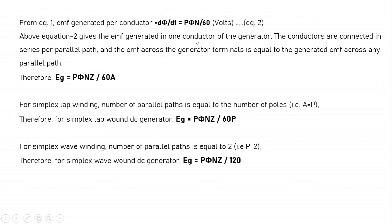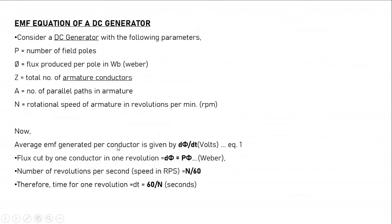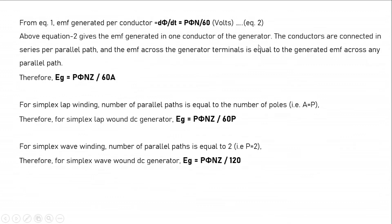Equation 2 gives the EMF generated in one conductor. The conductors are connected in series within each parallel path. If A parallel paths are provided, all conductors are distributed across these parallel paths, and the EMF across the generator terminals equals the EMF generated across any one parallel path. Therefore, total average EMF is φZNP/60A, where Z is the number of conductors and A is the number of parallel paths.